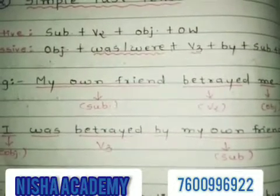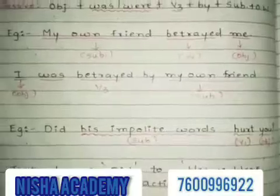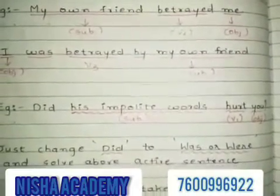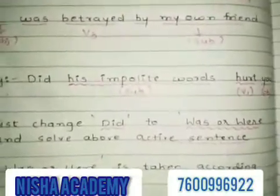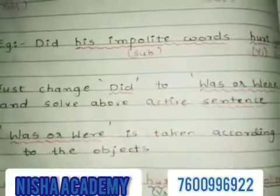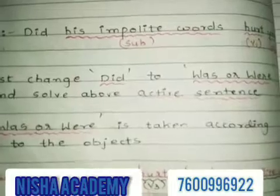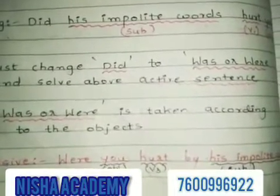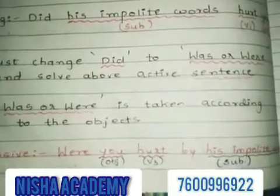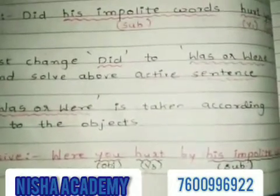Again, if the sentence is interrogative, it can be solved very easily. For example: 'Did his impolite words hurt you?' Just change 'did' to 'was/were,' chosen according to the object. In passive voice: 'Were you hurt by his impolite words?'